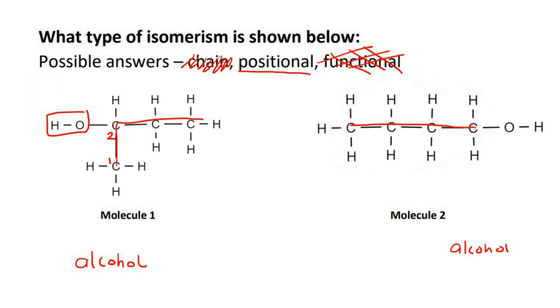For this one, the OH is on carbon number one. So you see that the functional group is on a different position. So this is what we call positional isomers. So we're going to say positional - that's the answer.